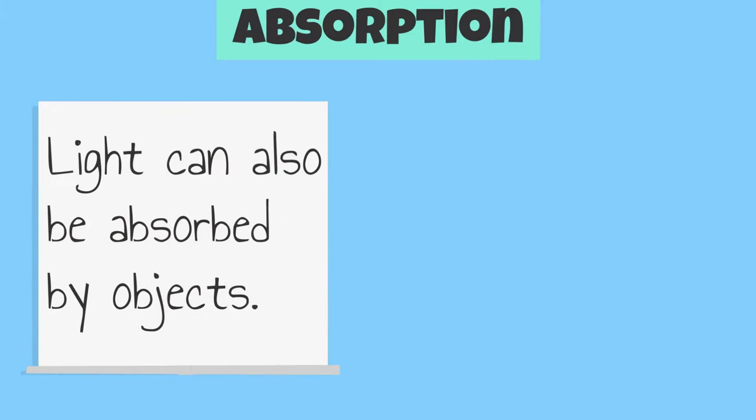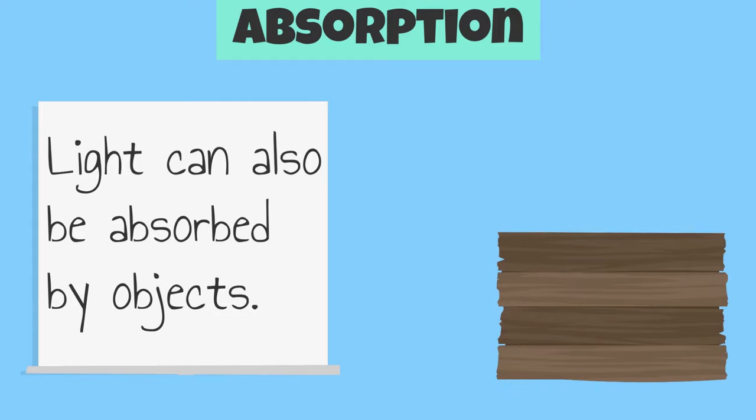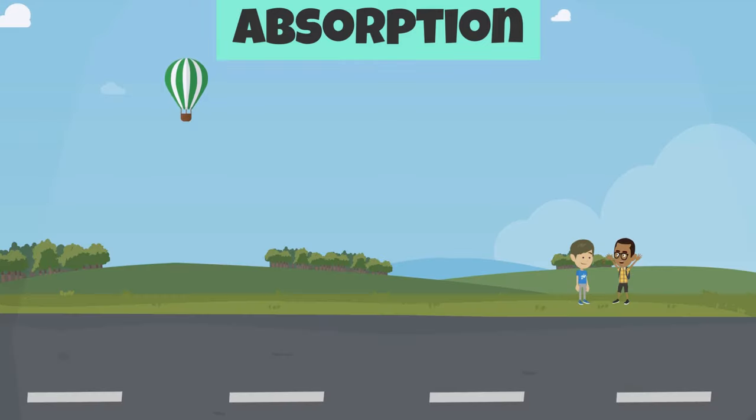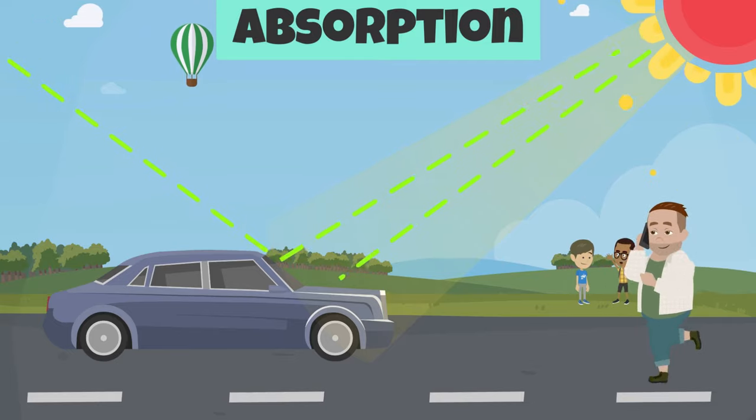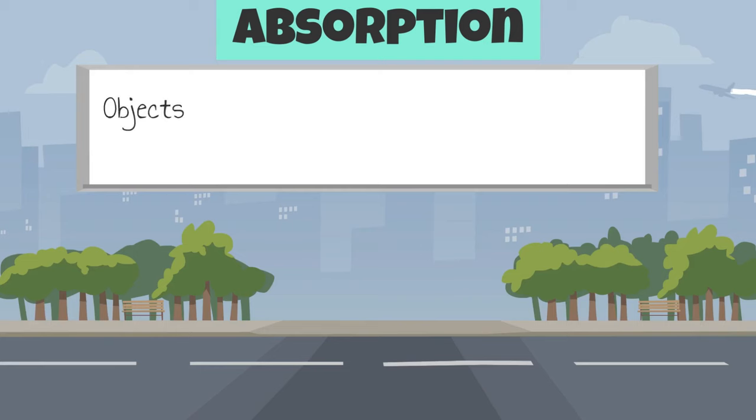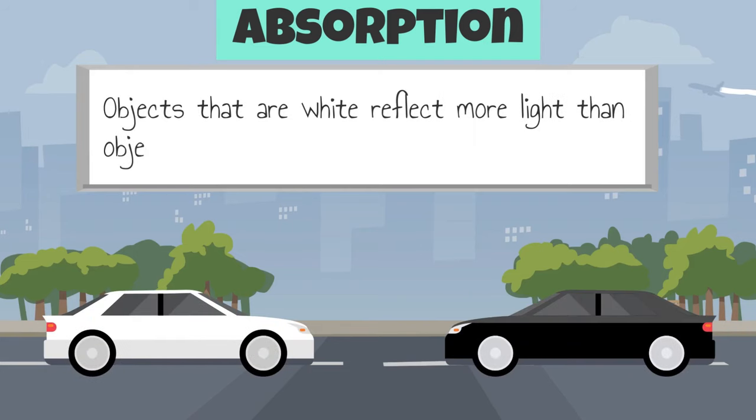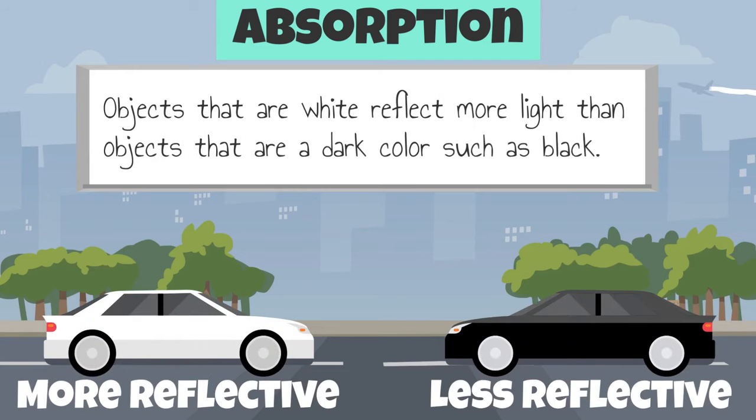Light can also be absorbed by objects. When light hits an object and stops, it is absorbed. An example of this is when light energy from the sun hits a car. Some light rays are absorbed by the car, making it hot, while other rays bounce back. Objects that are white reflect more light than objects that are a dark color, such as black.